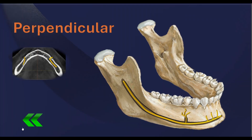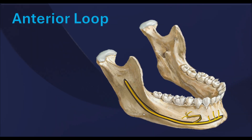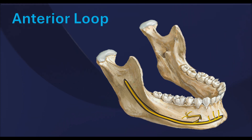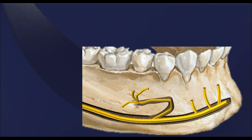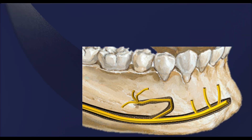The third type of mental nerve pathway is the anterior loop. Here, the nerve extends forward beyond the foramen before curving back to exit. This is the most critical variation in implant planning because misjudging its location can lead to nerve injury.